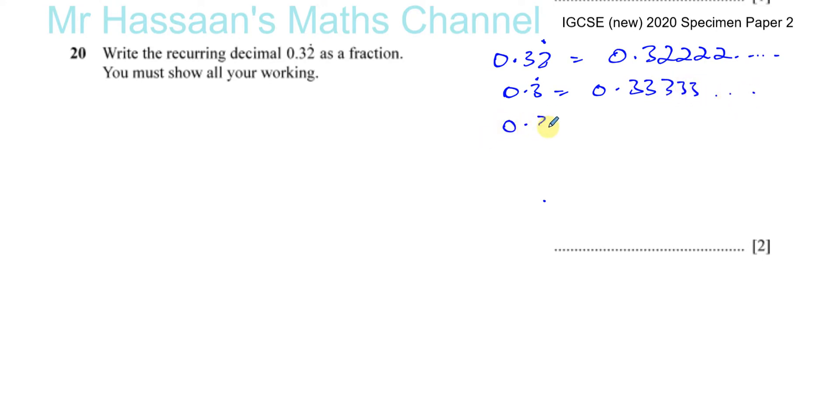If it was, for example, 0.312 and there was a dot on the three and the two, that means this is the pattern that continues on, so it just repeats 312, 312, 312 and so on. Okay, so there's a little background in case you're not sure.